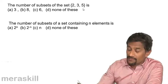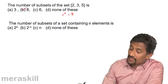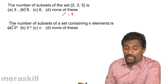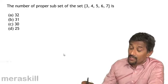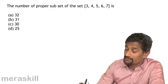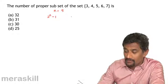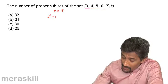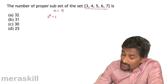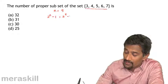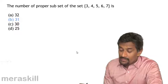Further, the number of subsets of {2, 3, 5} — again n = 3 — is 2^3 = 8. The general formula: number of subsets of a set containing n elements is 2^n. Now, for the number of proper subsets of {3, 4, 5, 6, 7}, n = 5, so proper subsets = 2^5 − 1 = 32 − 1 = 31. So there are 31 proper subsets.